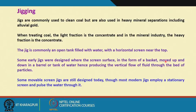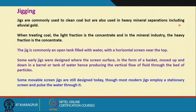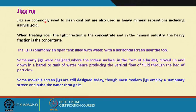Jigs are these days commonly used for coal processing, but they are also used extensively in heavy mineral separations including alluvial gold, iron ore processing, cassiterite processing, and chromite processing in certain cases. Apart from mineral processing, these principles are also being applied in recycling industries like hospital waste recycling and electronic waste recycling. Considerable changes in the design features have been made by different manufacturers.